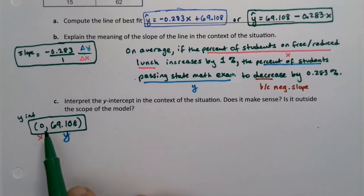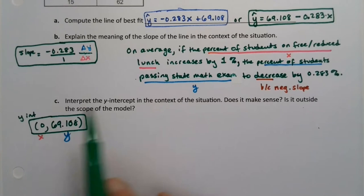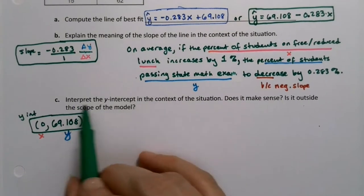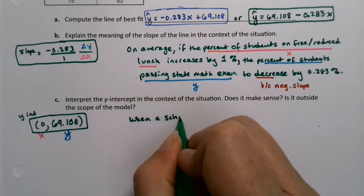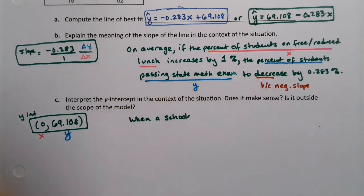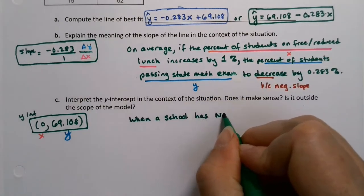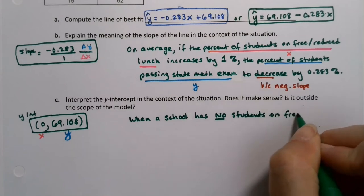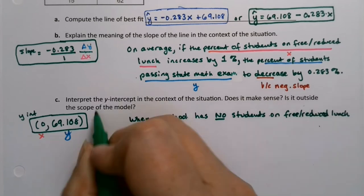If x is 0, that means you have a school that has no students on free or reduced lunch. Does that make sense? First of all, they didn't ask me whether it made sense, they just want us to interpret, so I will. So if or when a school has no students on free or reduced lunch. That's the 0 part.